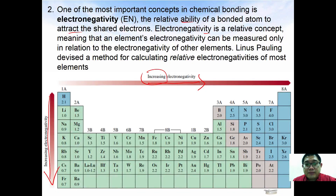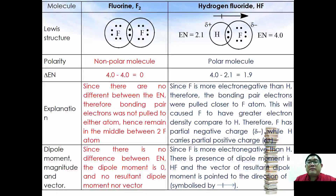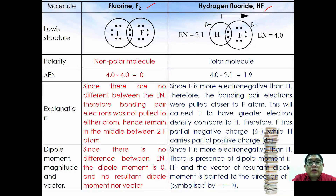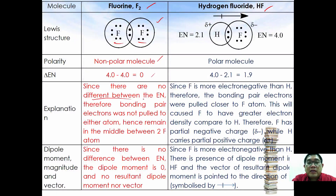Let's start with a simple molecule: the fluorine molecule F₂. Looking at its Lewis structure, we describe F₂ as a non-polar molecule because there is no difference in electronegativity between the two fluorine atoms — 4.0 minus 4.0 equals zero. Since there is no electronegativity difference, the bonding pair of electrons is not pulled toward either atom and remains in the middle. Therefore, the dipole moment equals zero and there is no resultant dipole moment vector.